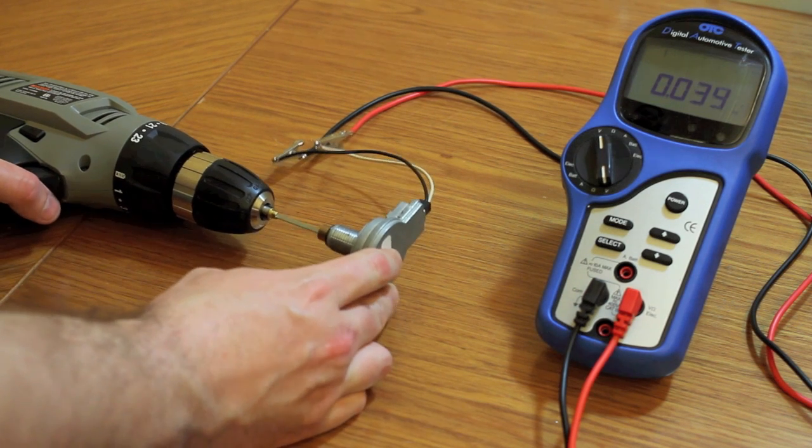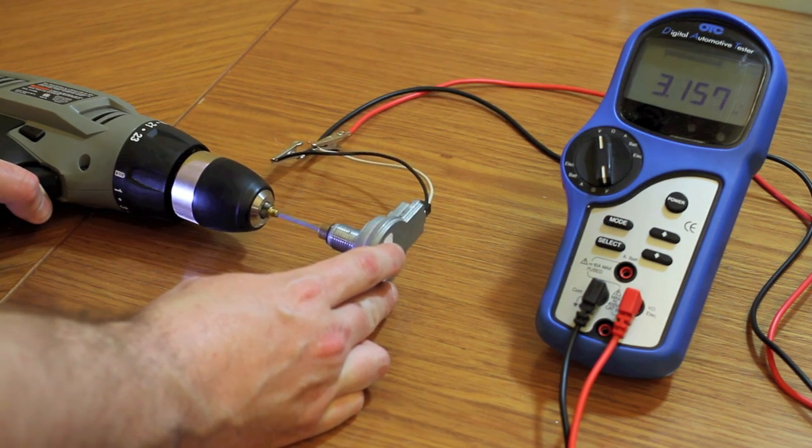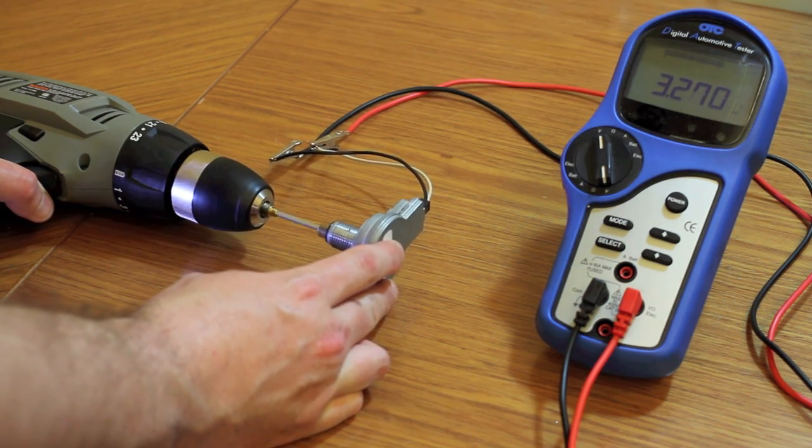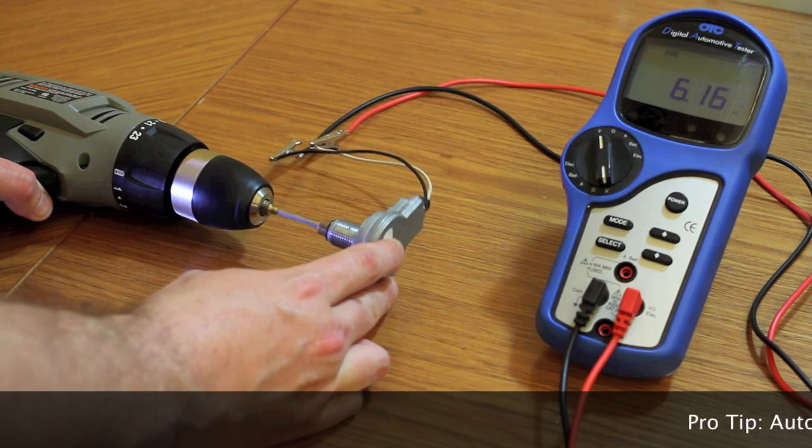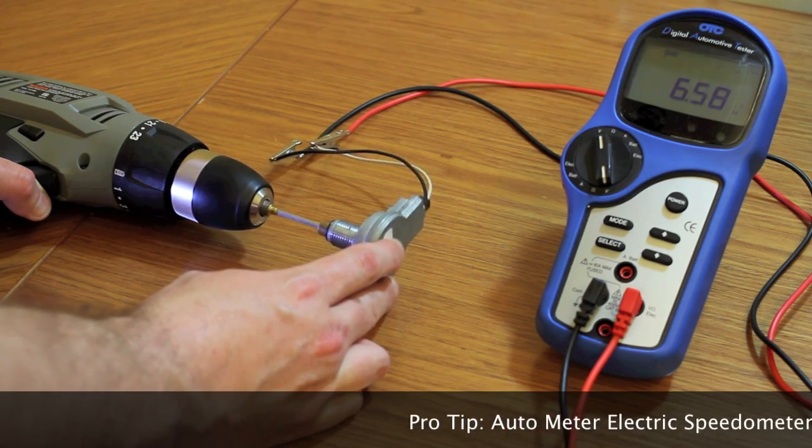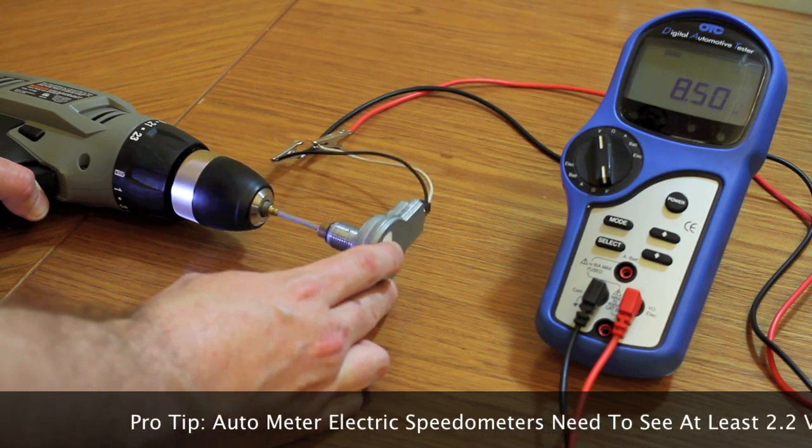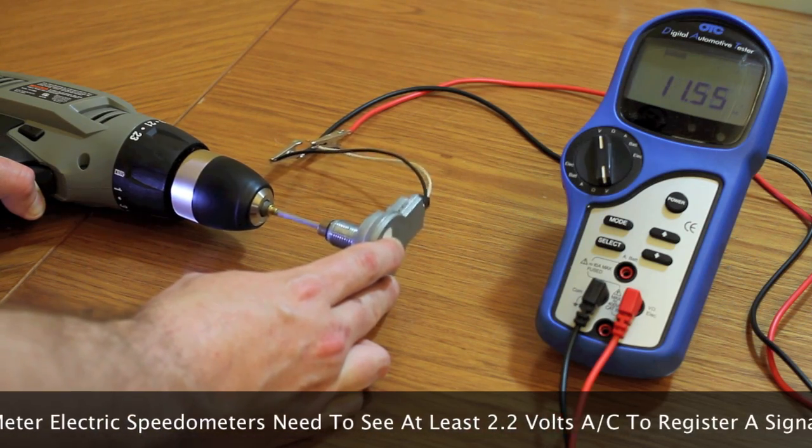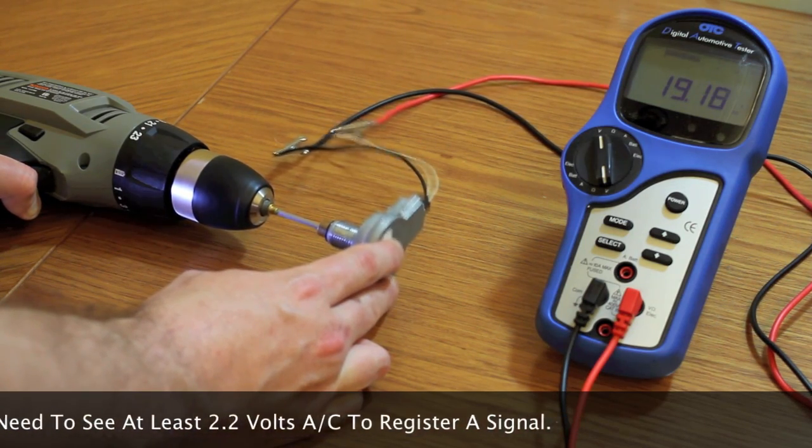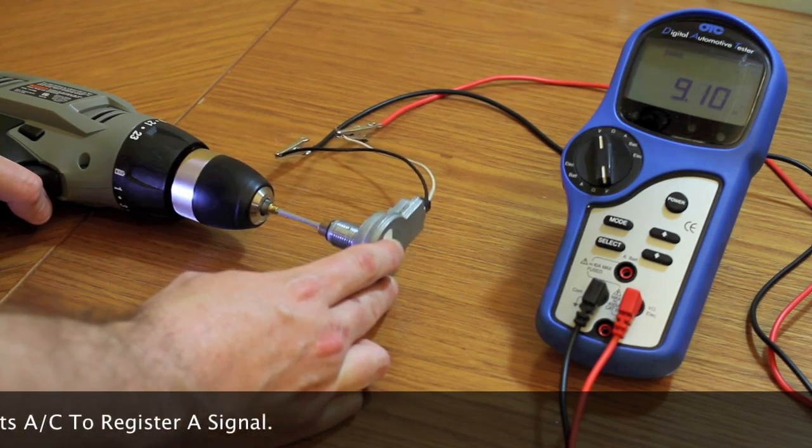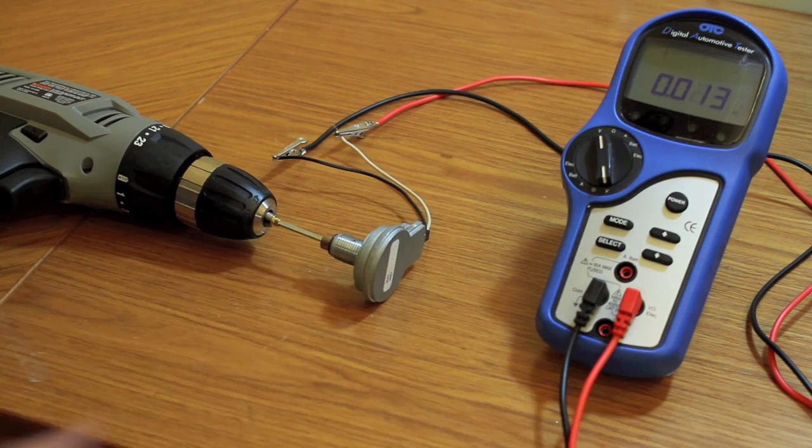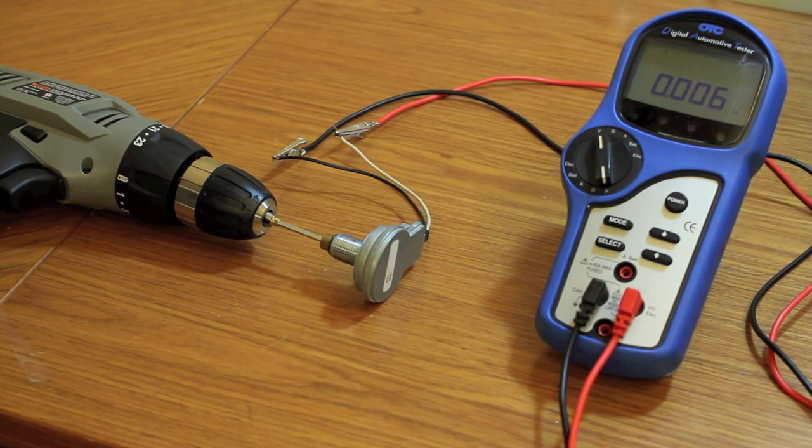Now if you watch the meter, as the speed increases, the voltage will increase as well. The voltage you see may be different than the voltage I'm seeing here, but as long as we are seeing more voltage as it goes faster, we can tell that we're getting an output and that this sensor is indeed functioning properly.